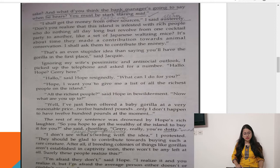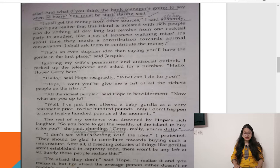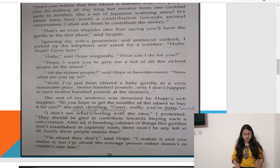'I shall get the money from other sources,' he said sternly. 'Don't you realize that this island is infested with rich people who do nothing all day long but revolve from one cocktail party to another like a set of Japanese wall mice? It's about time they made a contribution towards animal conservation.' Jackie said, 'That's an even stupider idea than saying you'll have the gorilla in the first place.' Ignoring his wife's pessimistic outlook, he picked up the telephone.